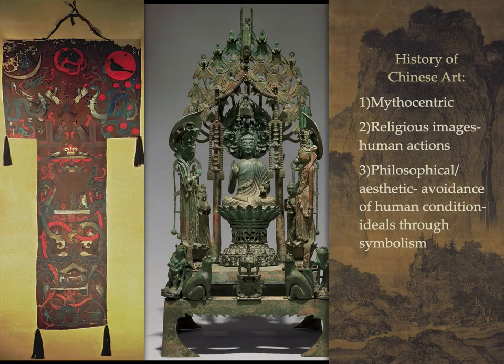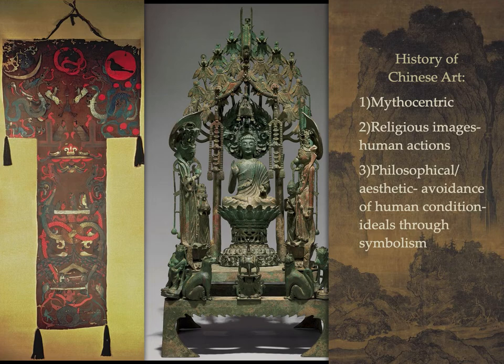With the evolution in the history of Chinese art, we have three categories. Number one is mythocentric — the belief in a close relationship between human and supernatural worlds. Number two is religious images connected with human actions, where Confucianism and Buddhism are dominant. Finally, number three is the philosophical and aesthetic, where you have the avoidance of human conditions because the ideals are seen through symbolism.